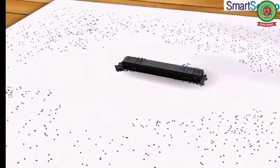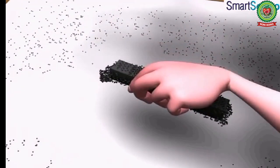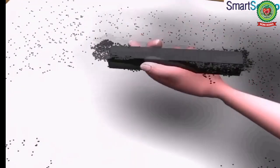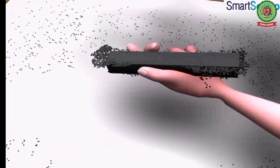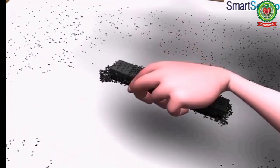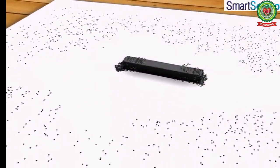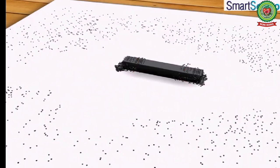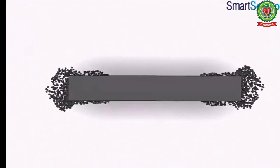We will observe that iron filings are attracted towards the magnet. Iron filings sticking to the magnet are more near the ends of the magnet than at other parts. This shows that the power of attraction of a bar magnet is not the same at all its parts — magnetic strength of a bar magnet is maximum at the ends and minimum at its middle part.